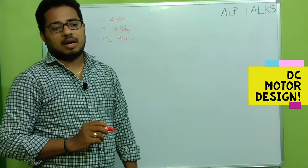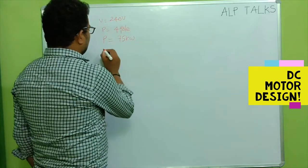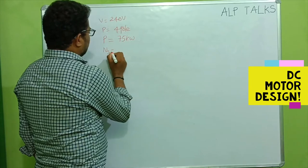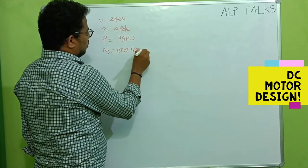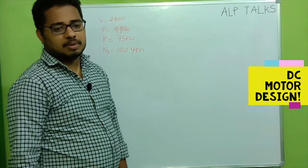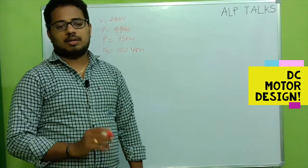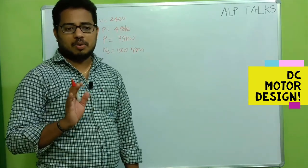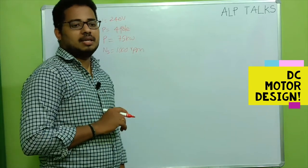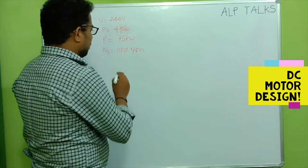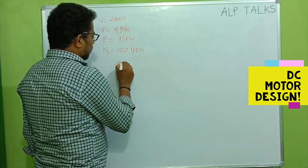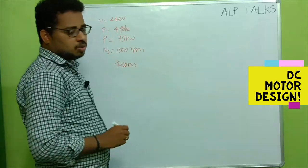It is of 1000 rpm - whatever synchronous speed is there, let's consider this is 1000 rpm. The motor is screen protected and of Class B insulation.